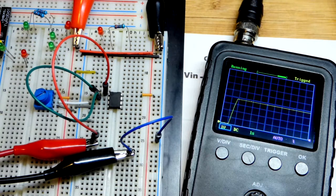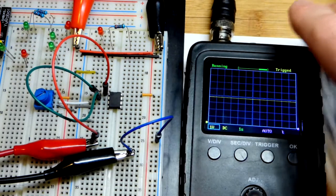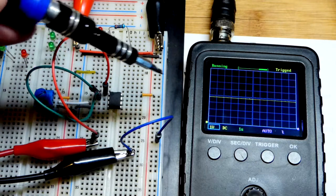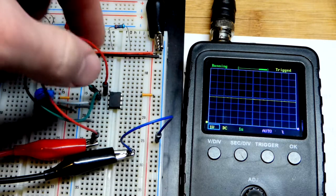So that's common with outputs of integrated circuits. Sometimes they can't go to one rail or the other one.